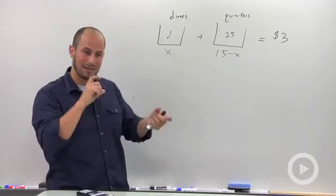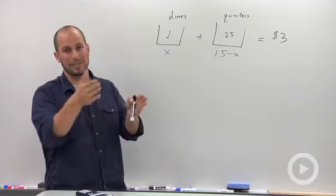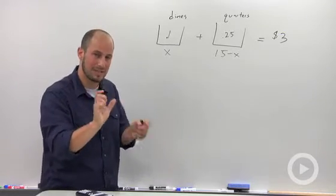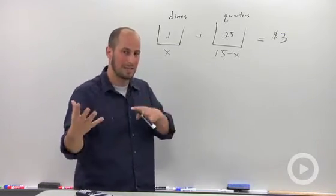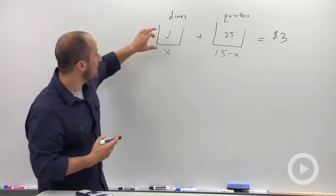So a dime and a quarter, yes you have two coins, but they're actually worth that 10 plus that 25, 35 cents. So making sure you designate between denomination and coin is really, really important.